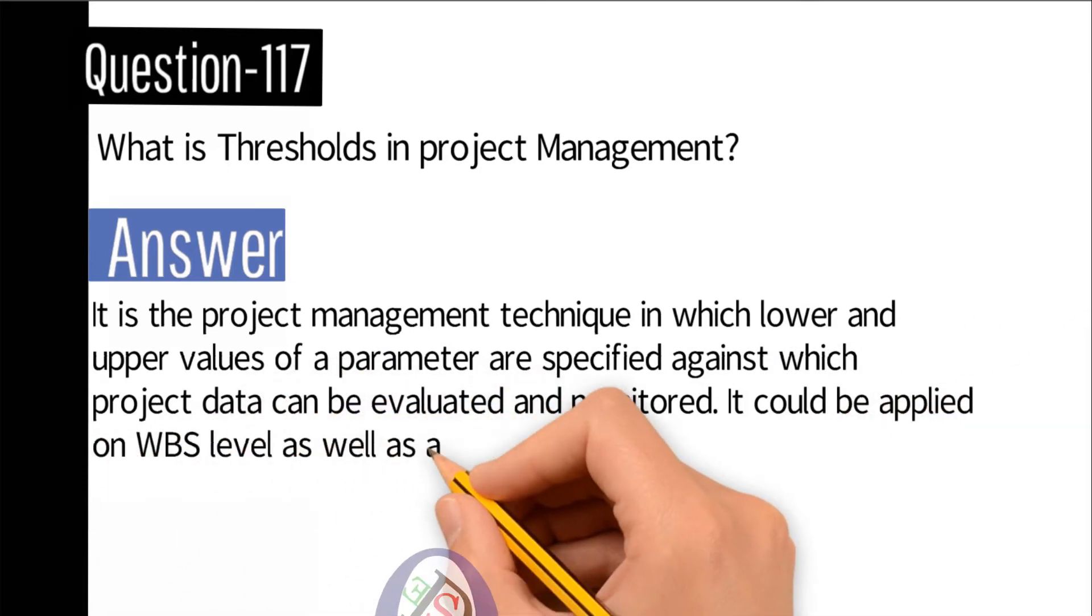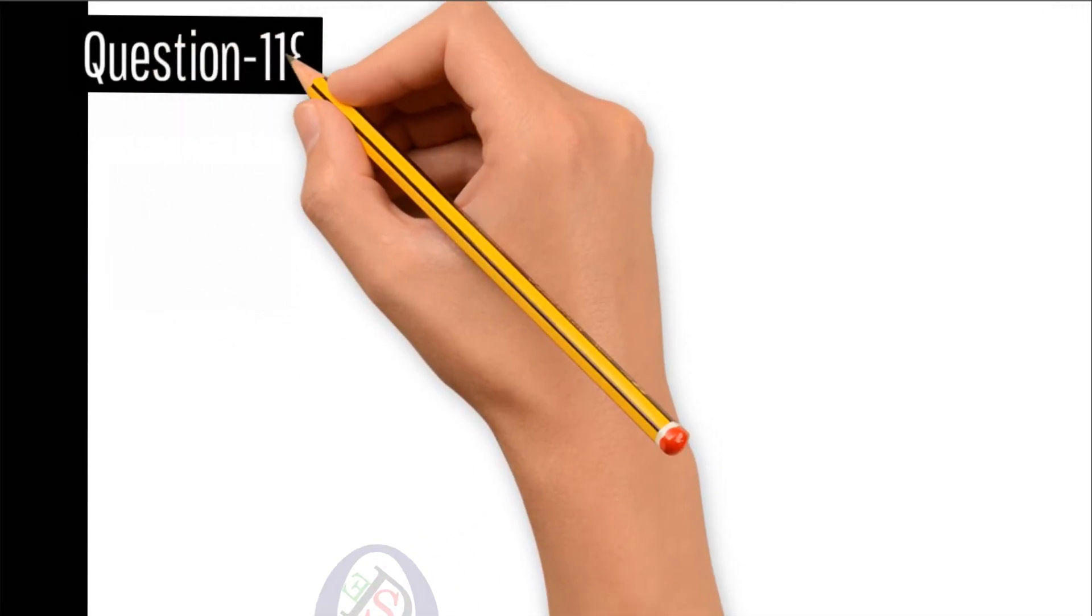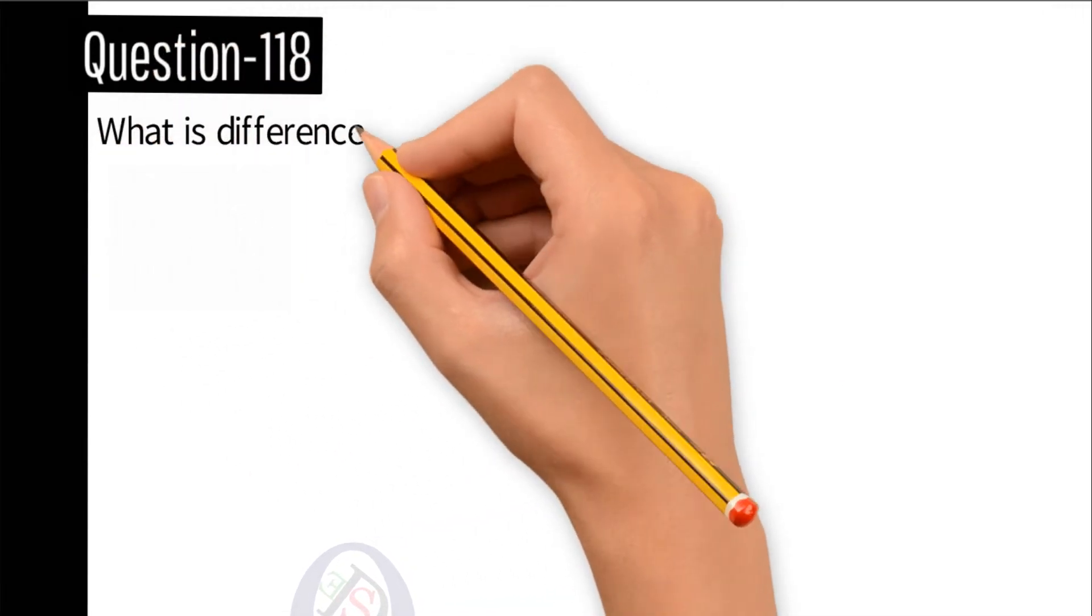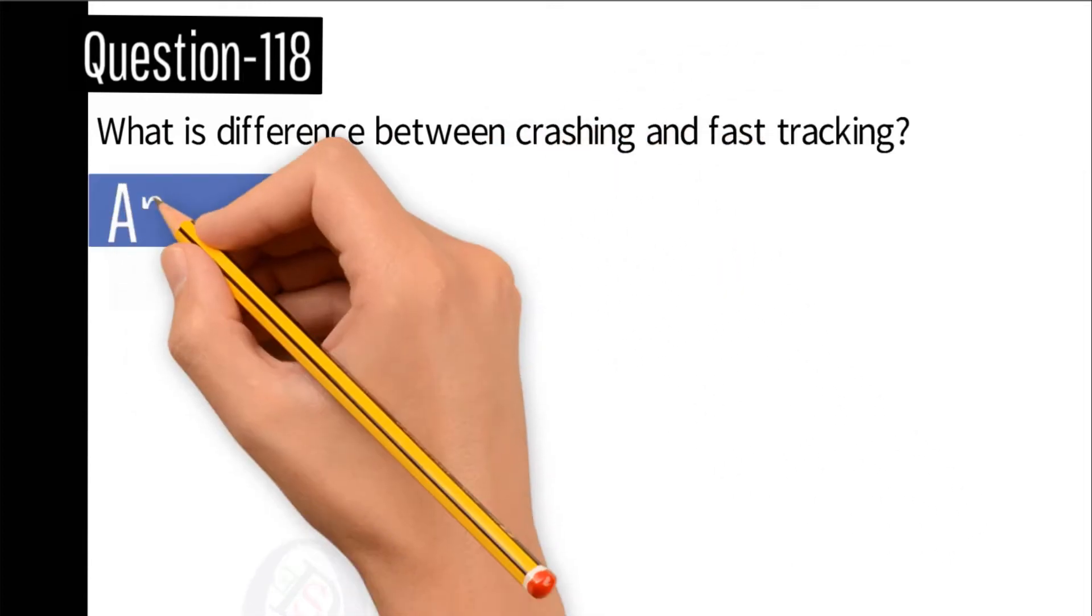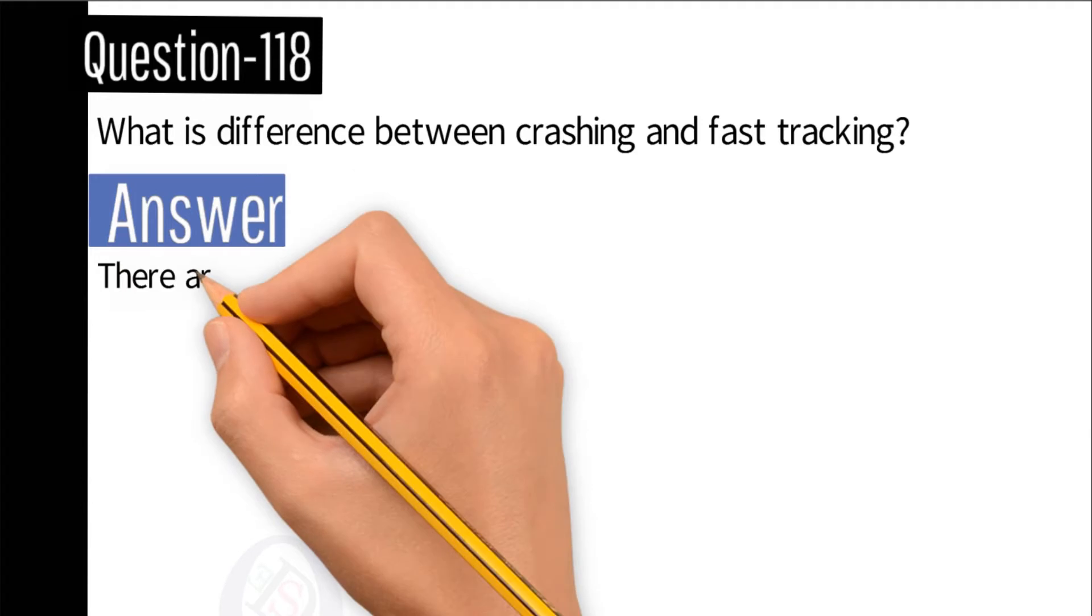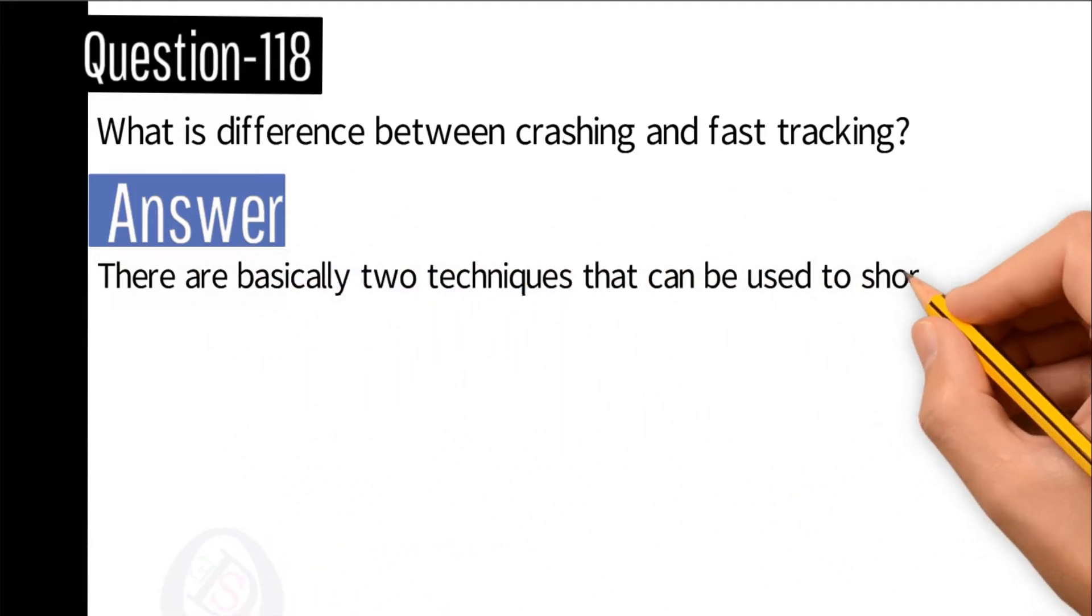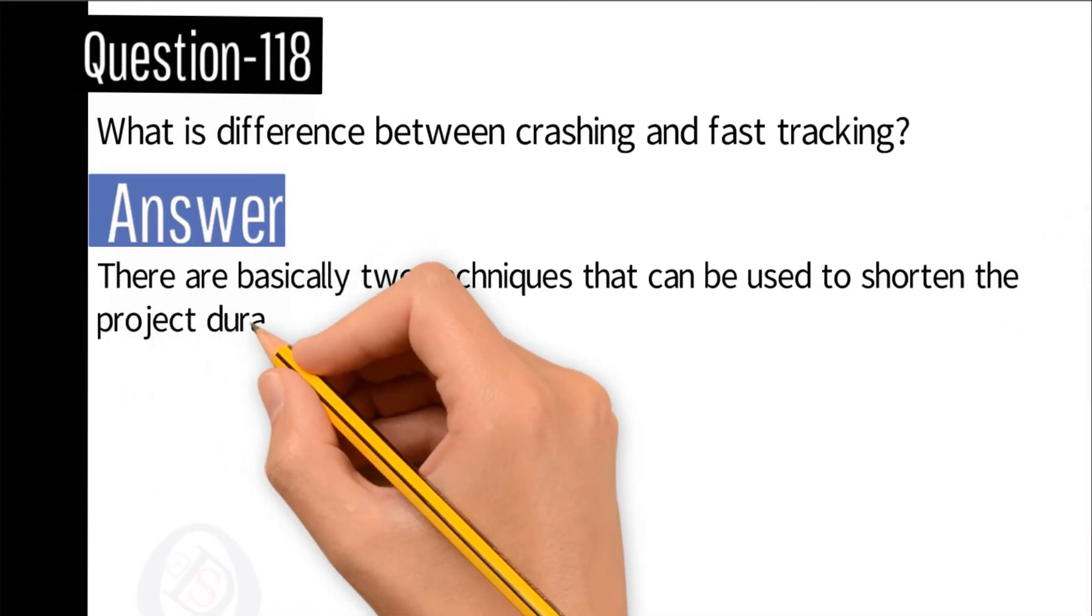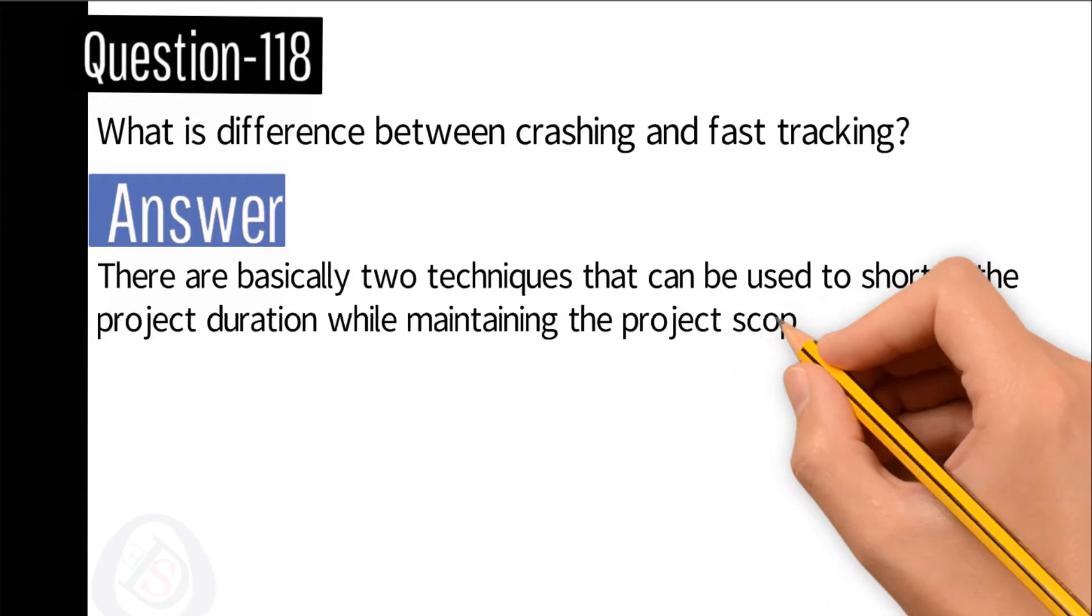Question number 118: What is difference between crashing and fast tracking? Answer: There are basically two techniques that can be used to shorten the project duration while maintaining the project scope. These techniques are fast tracking and crashing.